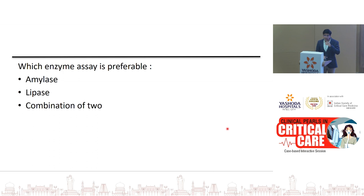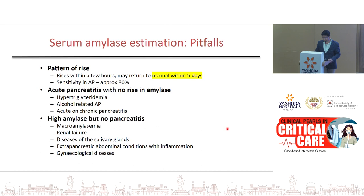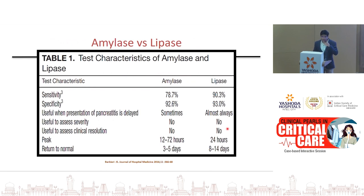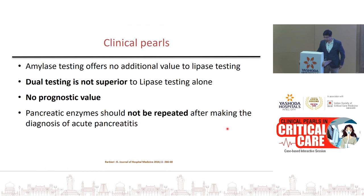In the emergency setting for suspected pancreatitis, should you order amylase, lipase, or both? Some pitfalls of amylase: it rises within a few hours and normalizes in about 5 days. In the index case the patient presented on day 6, so amylase can be falsely low — lipase is more helpful here. False-negative amylase occurs in hypertriglyceridemia and acute-on-chronic pancreatitis; false positives in renal failure, macroamylasemia, or gynecological disorders. Both are good diagnostically, but when a patient presents late prefer lipase. Neither has prognostic value — do not repeat tests after diagnosis.